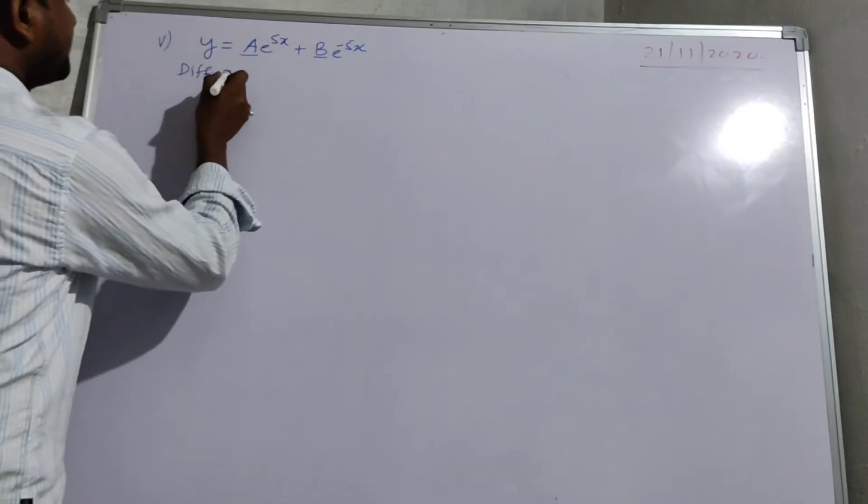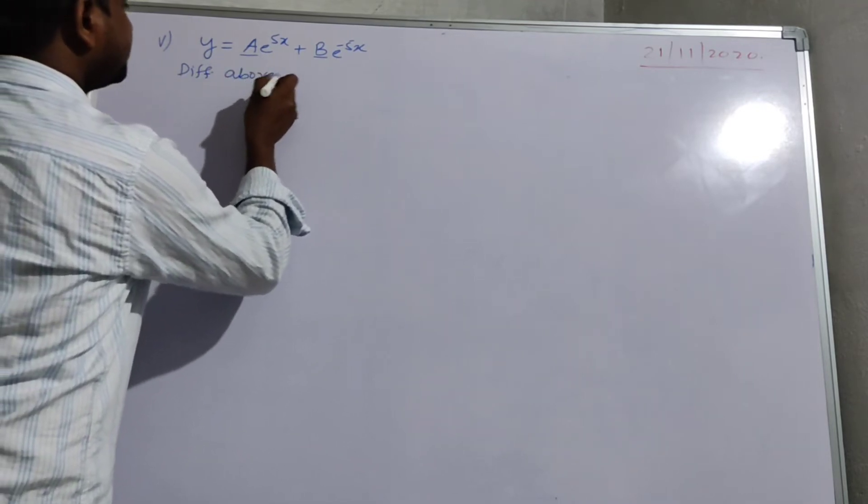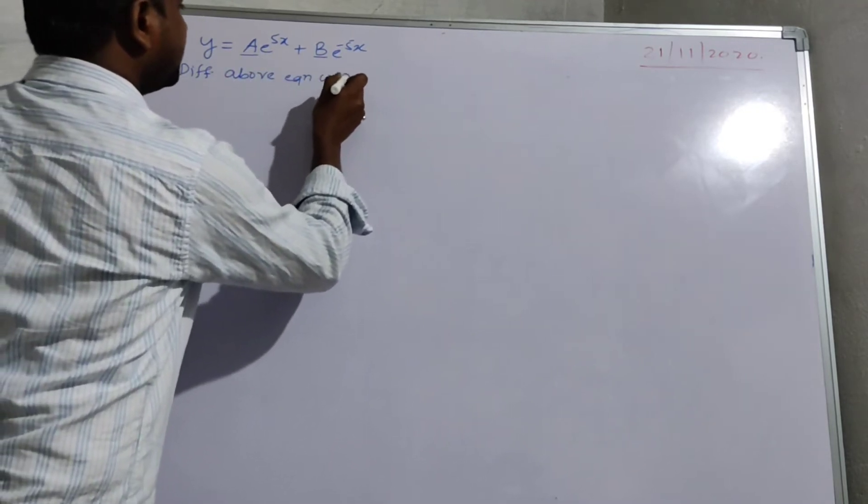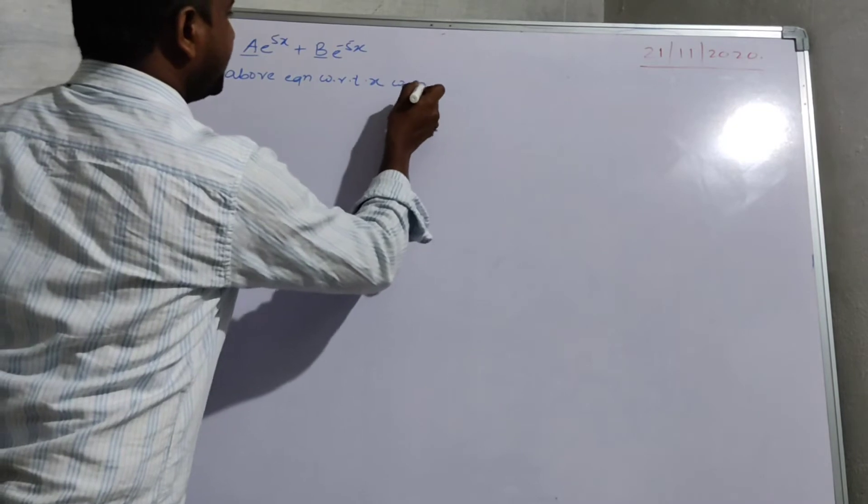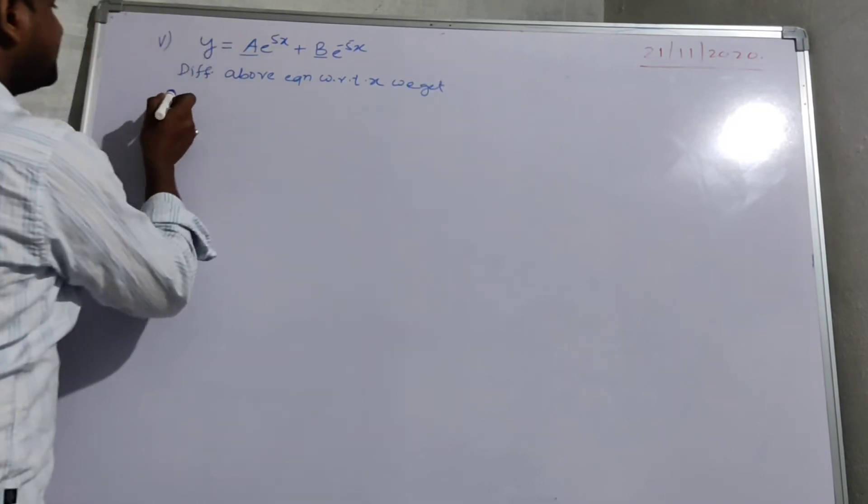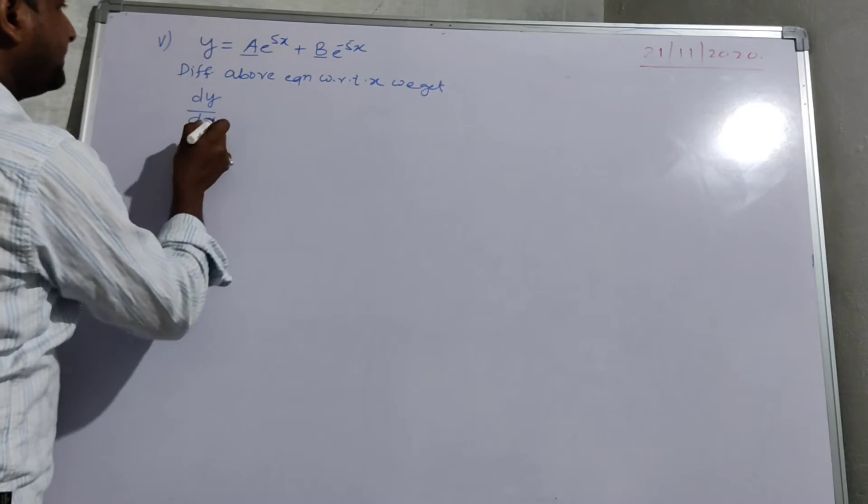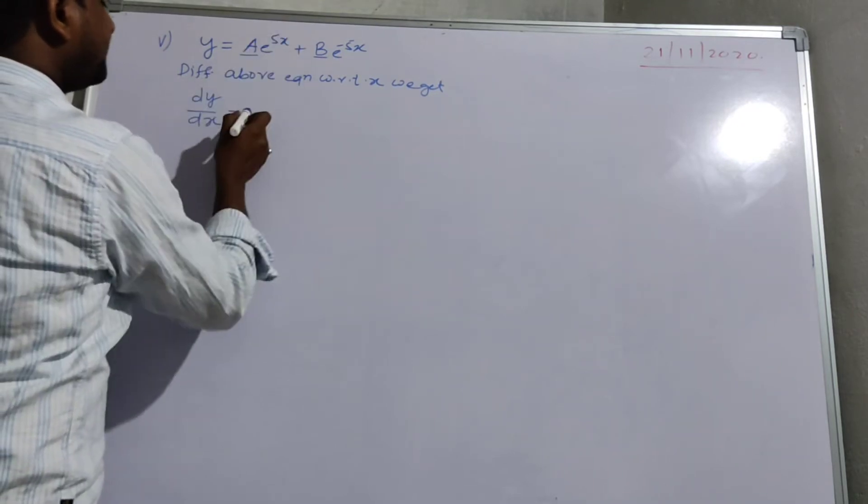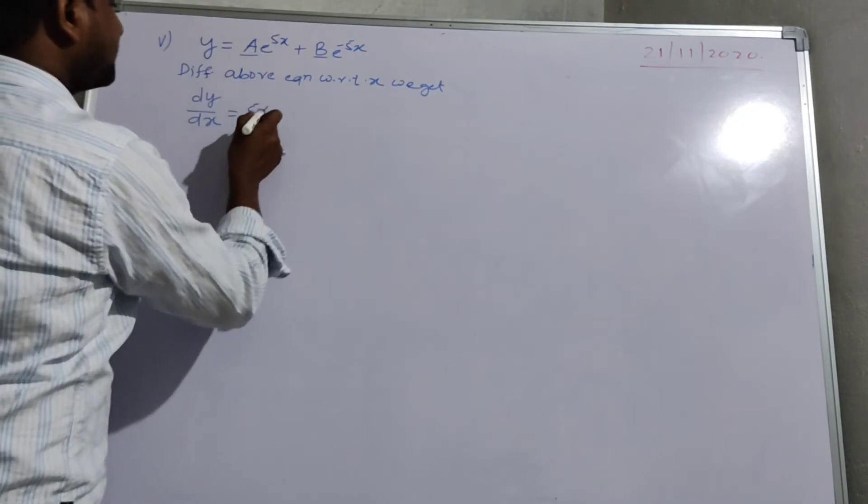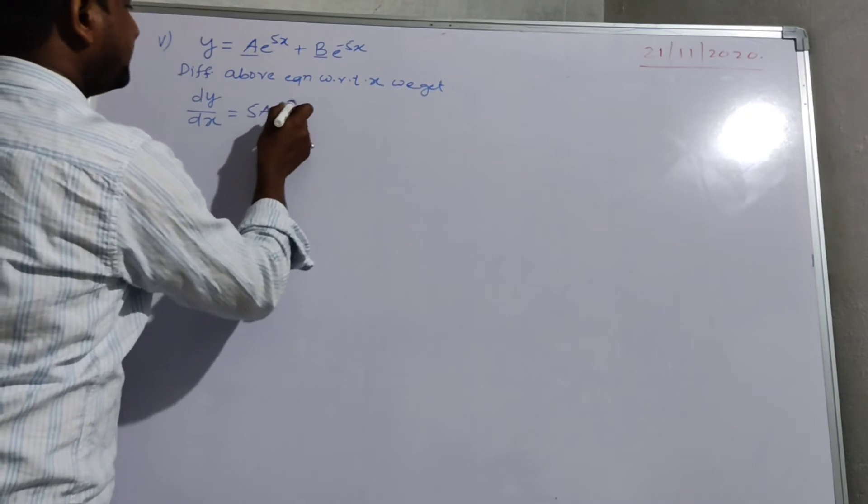Let's start. Differentiating our equation with respect to x, first time when we differentiate here, dy by dx is equal to... If we differentiate here, 5a e to the power 5x.